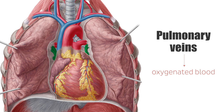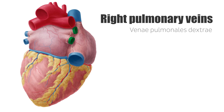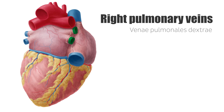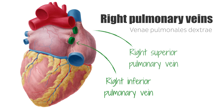There are four pulmonary veins in total, two connected with each lung. The right pulmonary veins, seen here from a posterior view, carry blood from the right lung into the left atrium of the heart, where it is distributed to the rest of the circulatory system. They are the right inferior pulmonary vein and the right superior pulmonary vein.